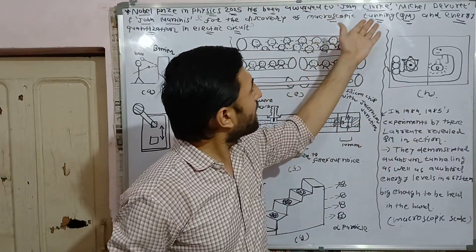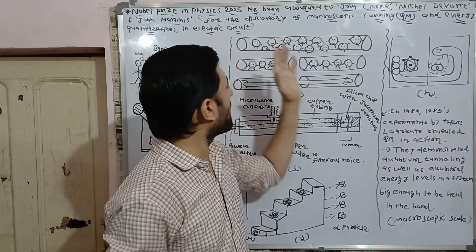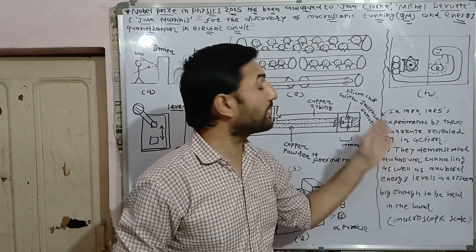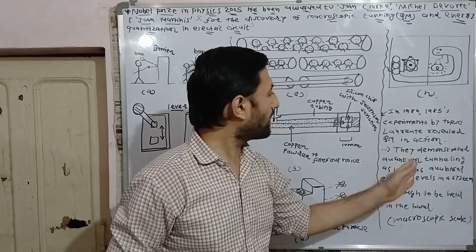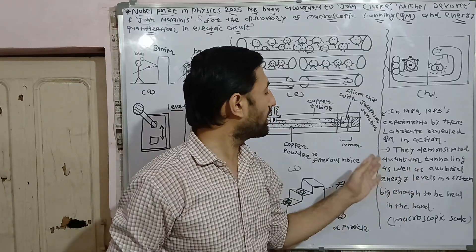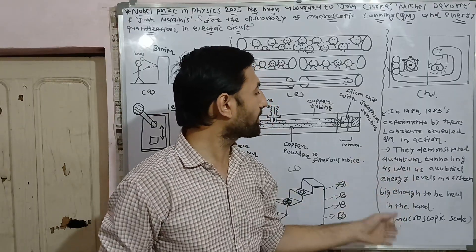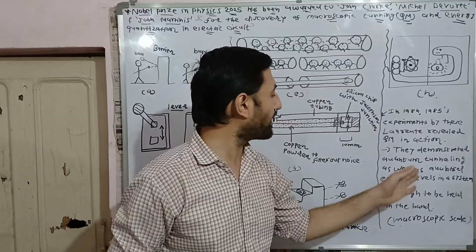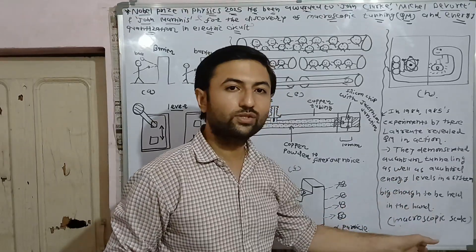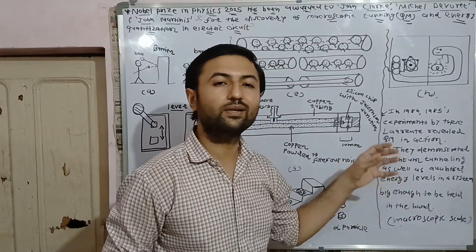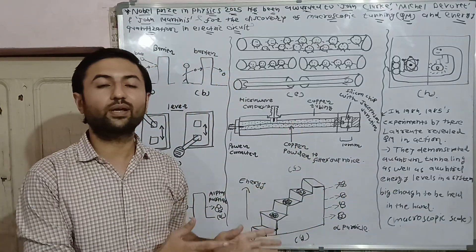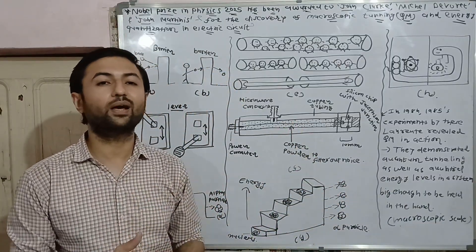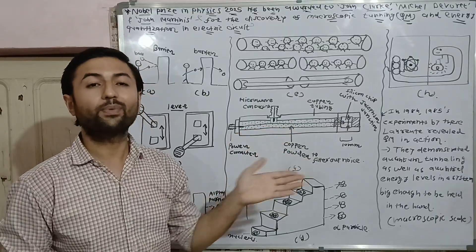In 1984 and 1985, John Clark, Michael Devoret, and John Martinis demonstrated this experiment in which quantum tunneling as well as energy quantization happens in a system which is big enough to be held in the considered circuit.